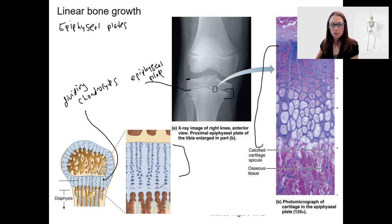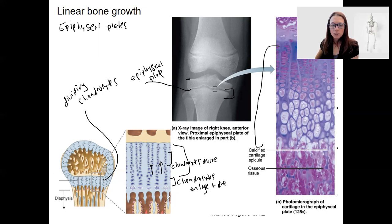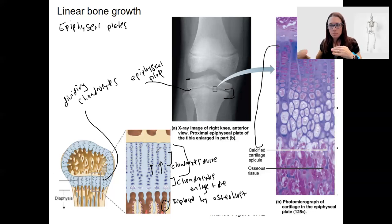What's going to happen is the chondrocytes are going to be dividing and pushing up this way. Here we have chondrocytes dividing up towards the top. Below that, chondrocytes are going to be enlarging and then die. They are then going to be replaced by — what do you think these little guys are? Osteoblasts, that will then calcify and be bone. This is, however, still dividing cartilage, so it's going to continue and keep depositing bone on the underside.